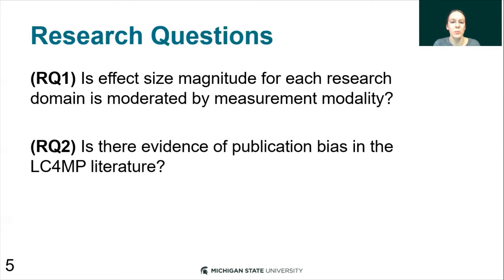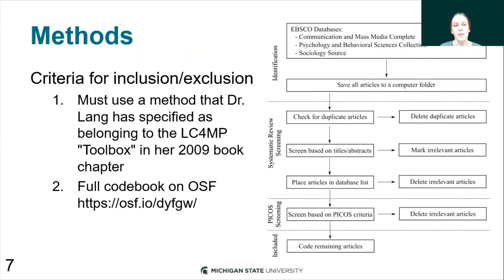We also had two exploratory questions: is the effect size magnitude for each research domain moderated by measurement modality, and is there any evidence of publication bias in the LC4MP literature? The article collection was previously done for another literature review on the LC4MP. From that we found 669 articles, then 142 unique articles. We included or excluded articles based on whether they used approaches for the domains of cognitive load, memory, and motivation specifically mentioned in Dr. Lange's LC4MP toolbox, and similarly for the self-report, behavioral, and psychophysiology measures. You can find the codebook and more information on inclusion/exclusion on our OSF.